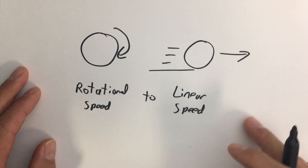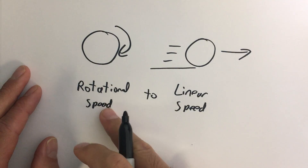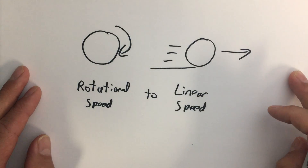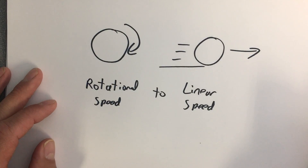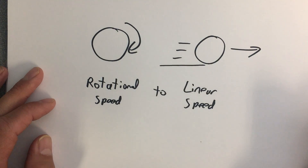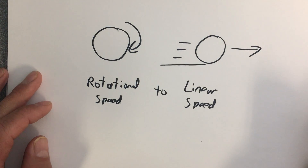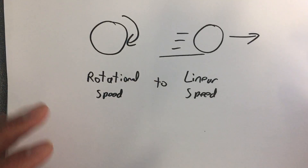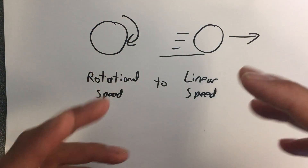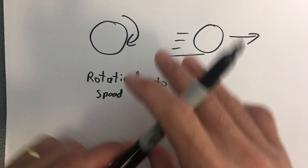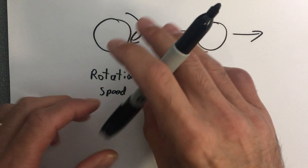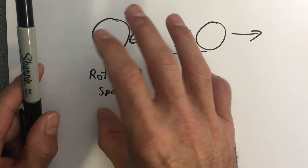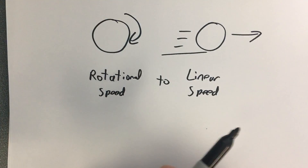I'm going to show you how to go from rotational speed to linear speed. The assumption is we're dealing with a wheel or a spool with no slippage — imagine a wheel with good rubber tires and perfect traction, so as that wheel rotates it does not slide along the ground, it just makes its way forward.